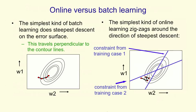And as you can see, the change in the weights moves us towards one of these constraint planes. So in the picture on the right, there are two training cases. To get the first training case correct, we must lie on one of those blue lines. And to get the second training case correct, the two weights must lie on the other blue line.